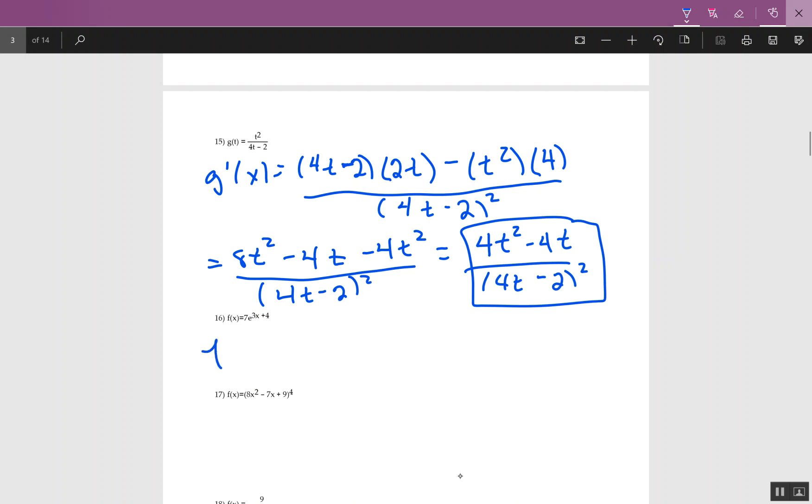16. This is chain rule using e. So I have 7e to the 3x plus 4, so you write 7e to the 3x plus 4. Don't forget, do the derivative of 3x plus 4, which is 3. So you're going to get 21e to the 3x plus 4.